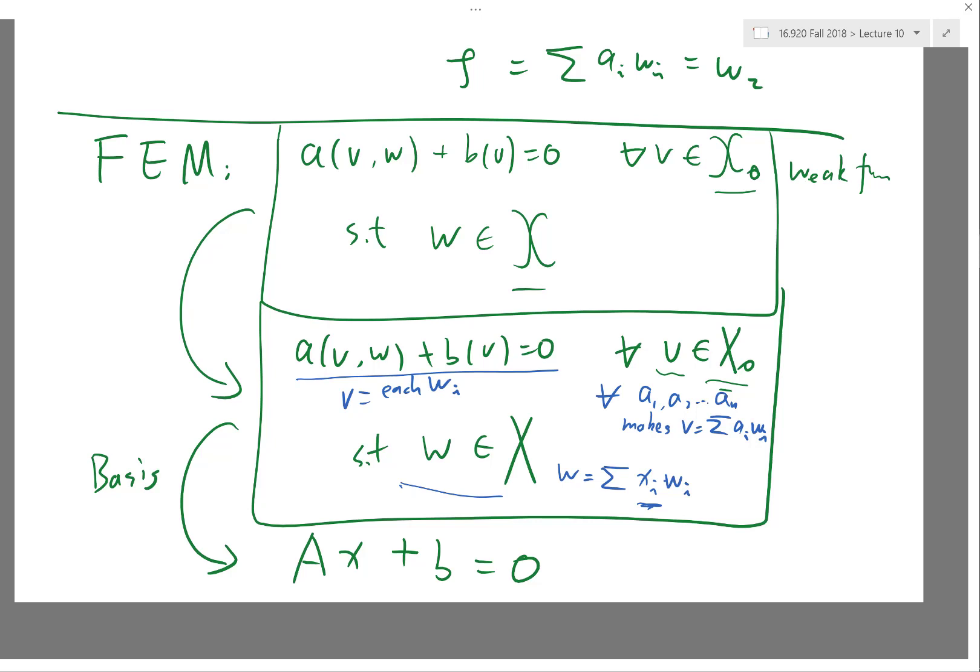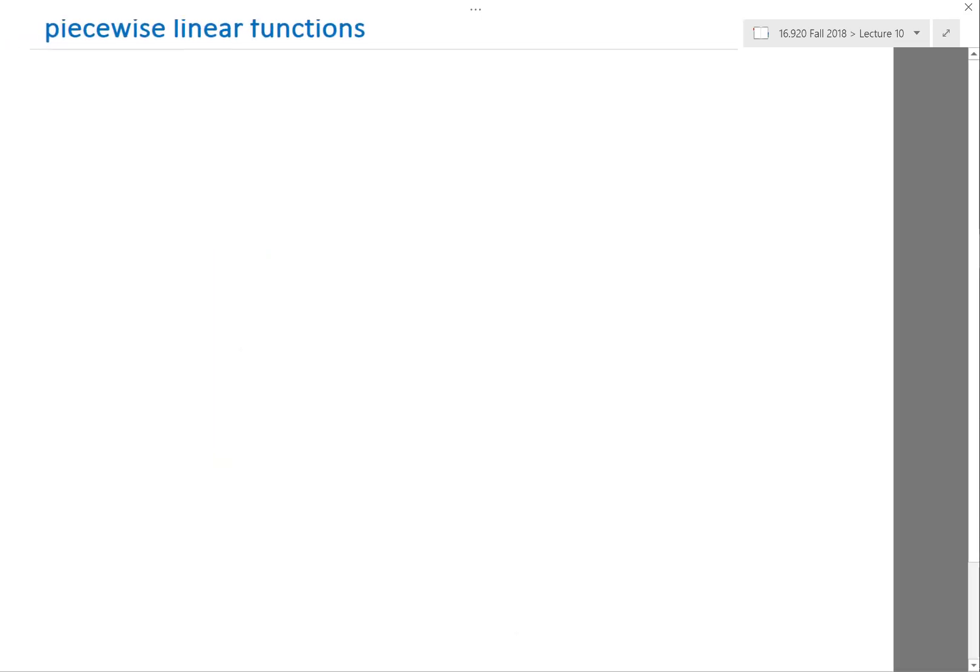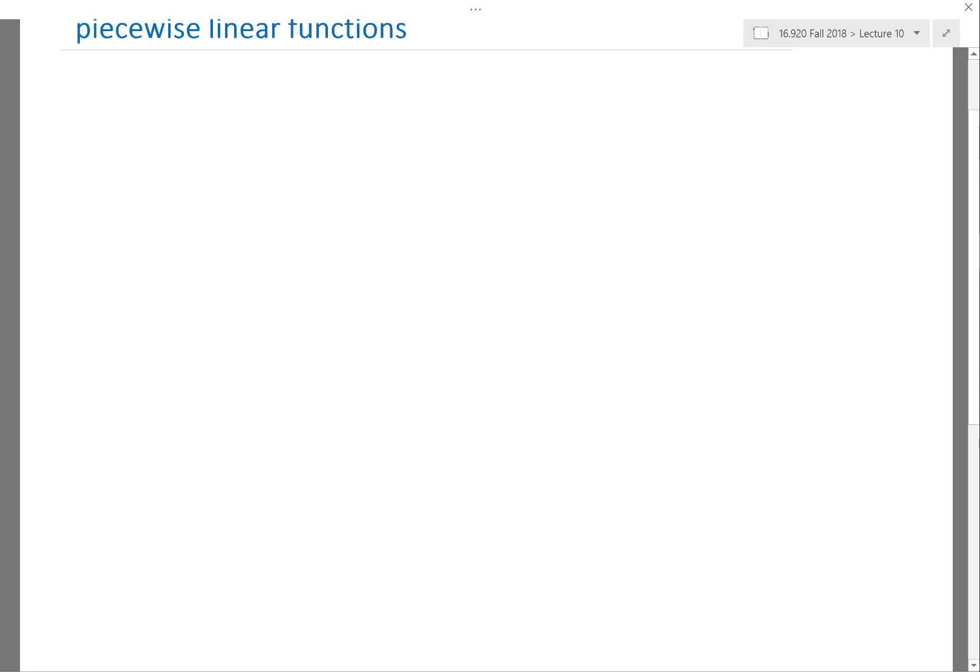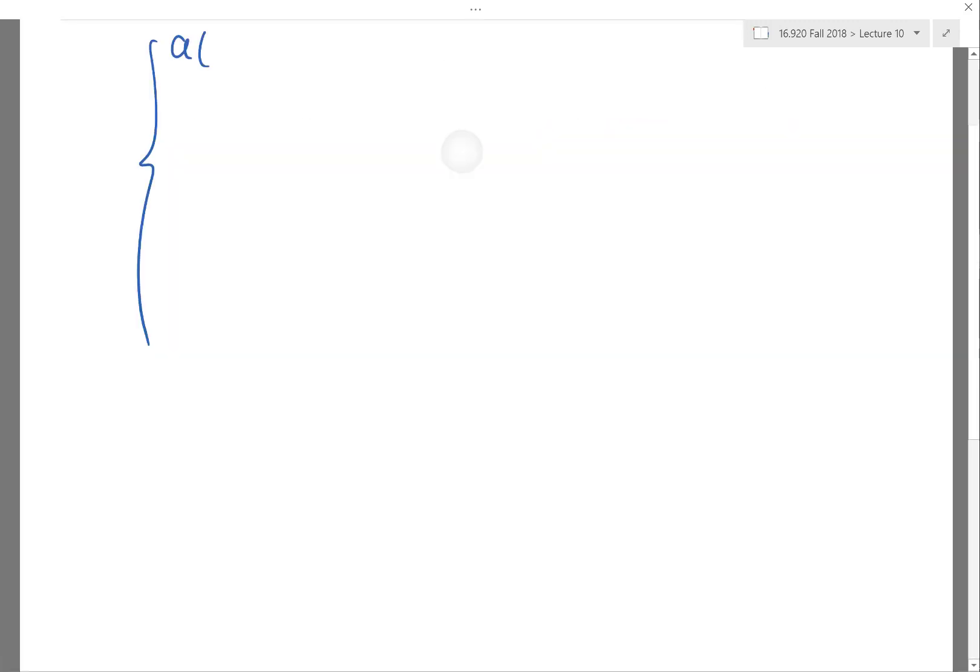I have converted this into a finite set of equations. So A(V,W) plus B(V) equals 0, let me write that down here.